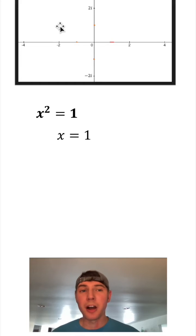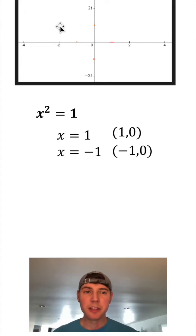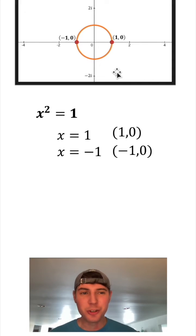The solutions to x squared equals 1 are positive 1 and negative 1. And if we rewrite those as points and plot those points, it cuts our circle into two equal parts.